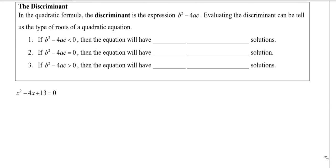In this video, we're going to talk about the discriminant. So in the quadratic formula, the discriminant is the expression b squared minus 4ac. So the expression that is beneath the square root, beneath the radical.